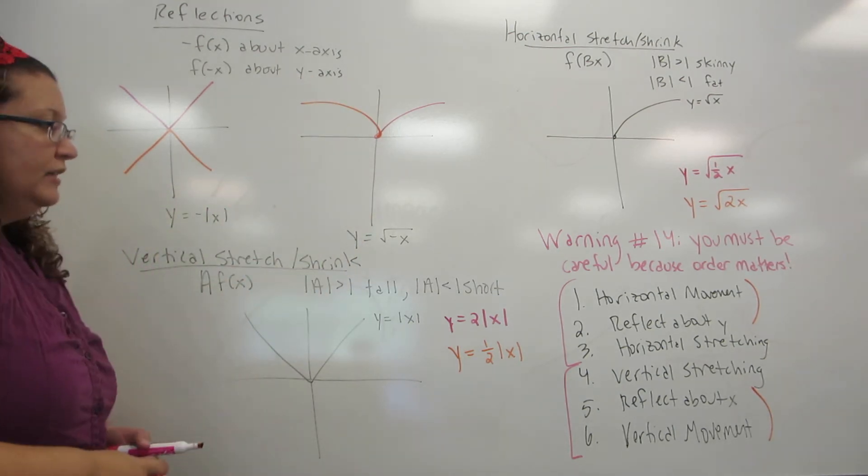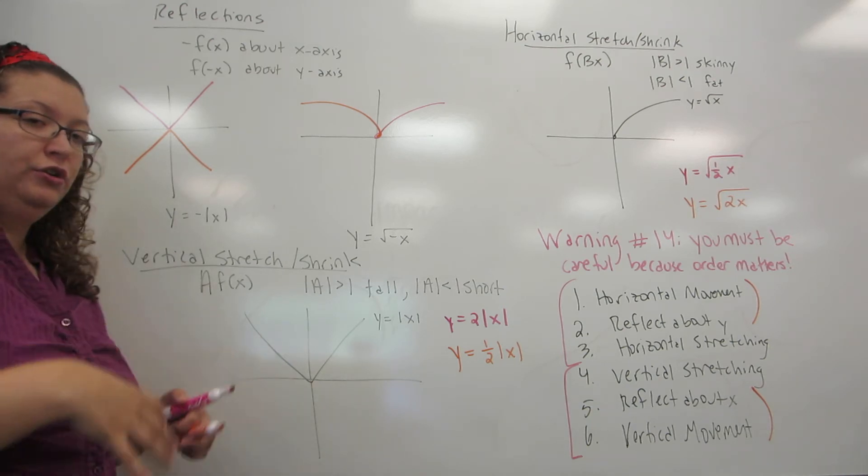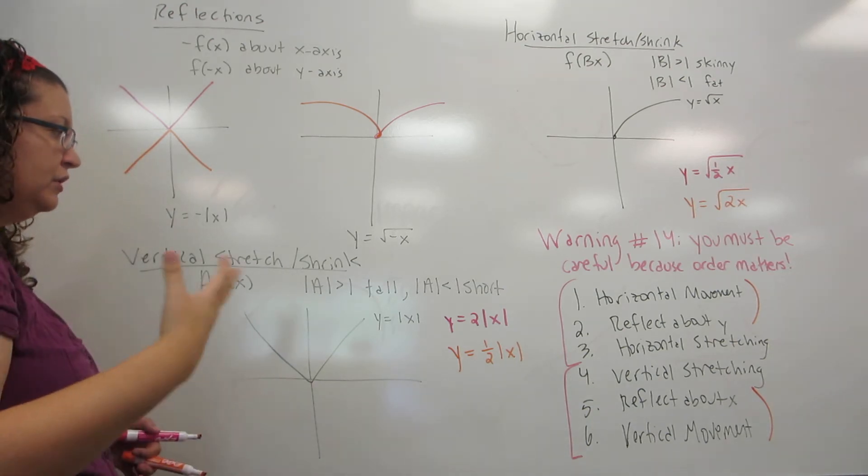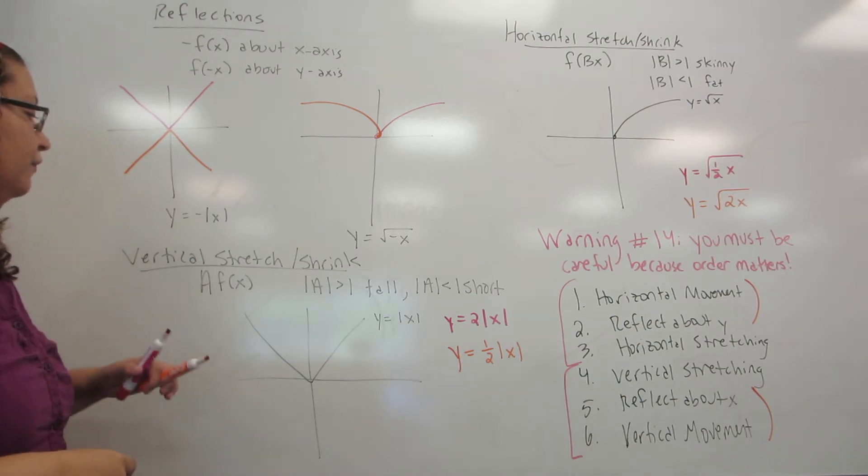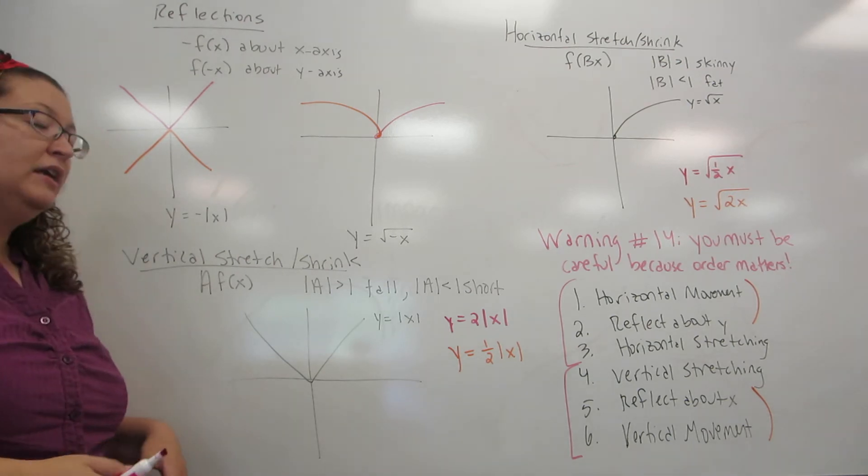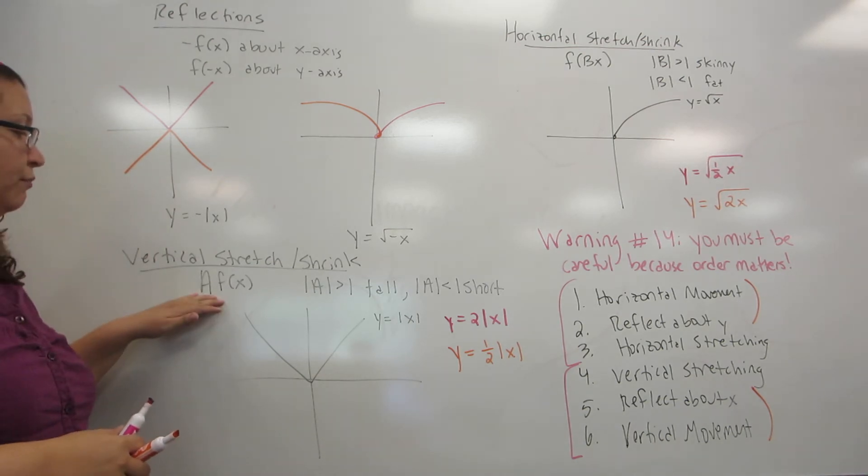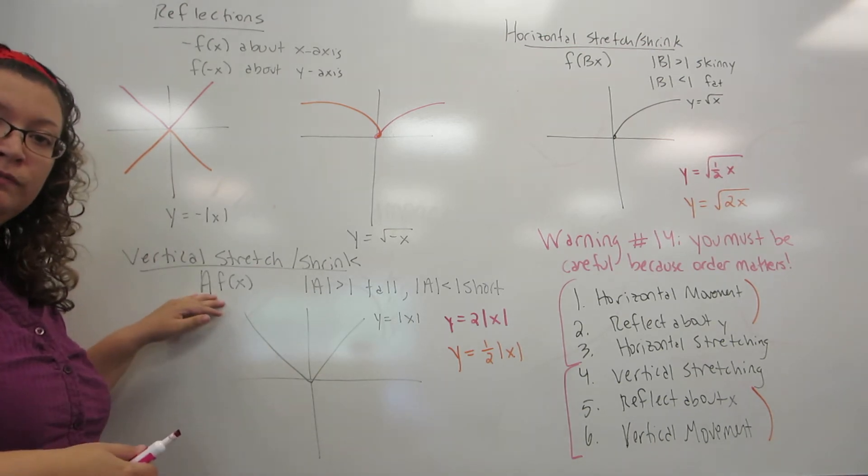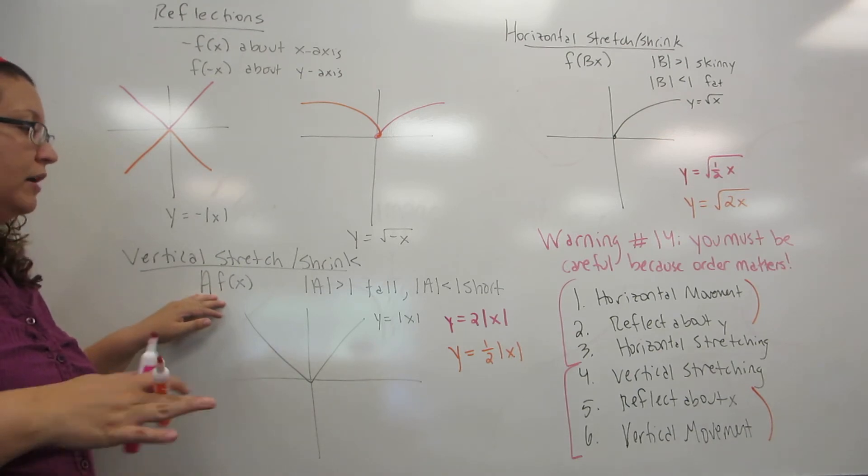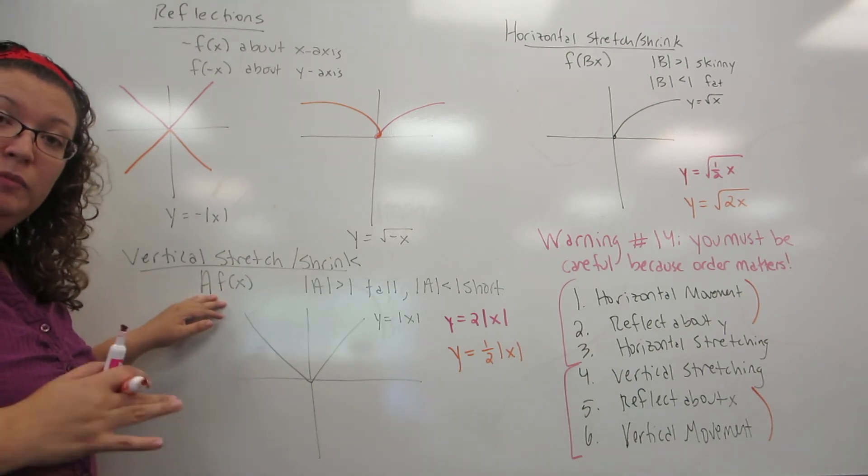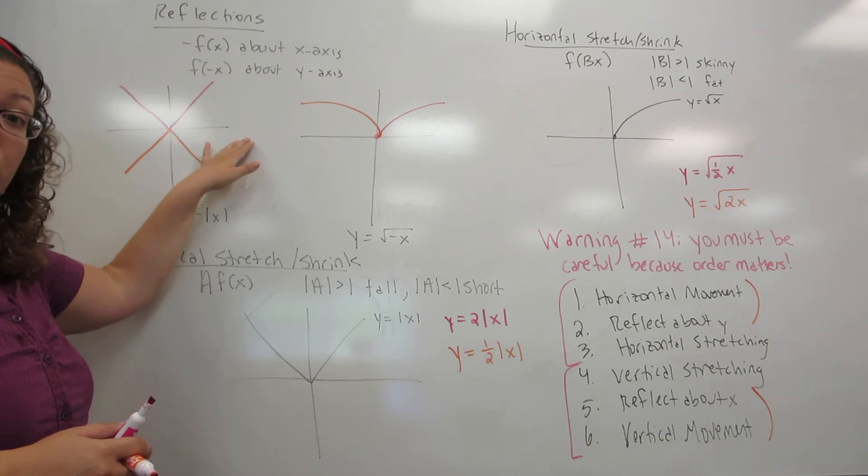There's one last kind of transformation, and this is stretching or shrinking. We'll do both horizontal and vertical. Vertical stretching and shrinking will make it either taller or shorter. This is where you multiply the entire function by some number in front. I'm not dealing if the number is positive or negative, because if it's negative, it just is combining it with a reflection.